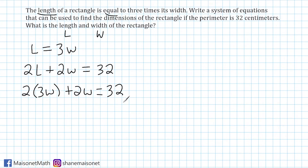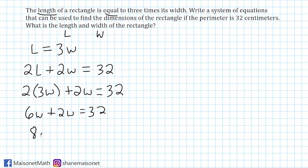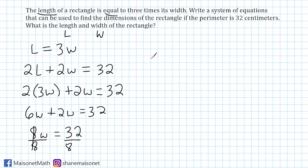Let's simplify this equation. We double 3W to get 6W, so 6W plus 2W equals 32. Combining those two terms, 6W and 2W is 8W, and that is equal to 32. Now we divide both sides by 8 to isolate W. We have determined that W equals 32 divided by 8, which is 4. So the width of our rectangle is equal to 4.